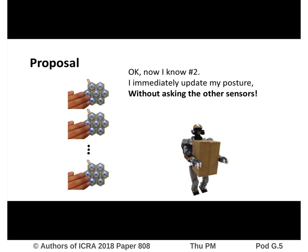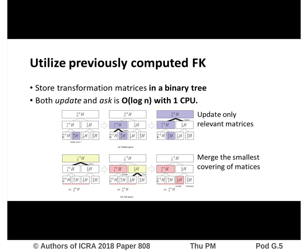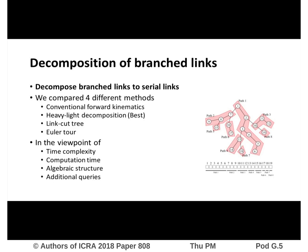In previous research, event-driven algorithms were limited to serial links. Here, we extend the work to branch links. There are two core ideas. The first is implementing kinematics by constructing a binary tree in which each node holds a homogeneous matrix — when one joint angle changes, only the ancestor matrices need updating. The second idea is decomposing branches into several serial links.